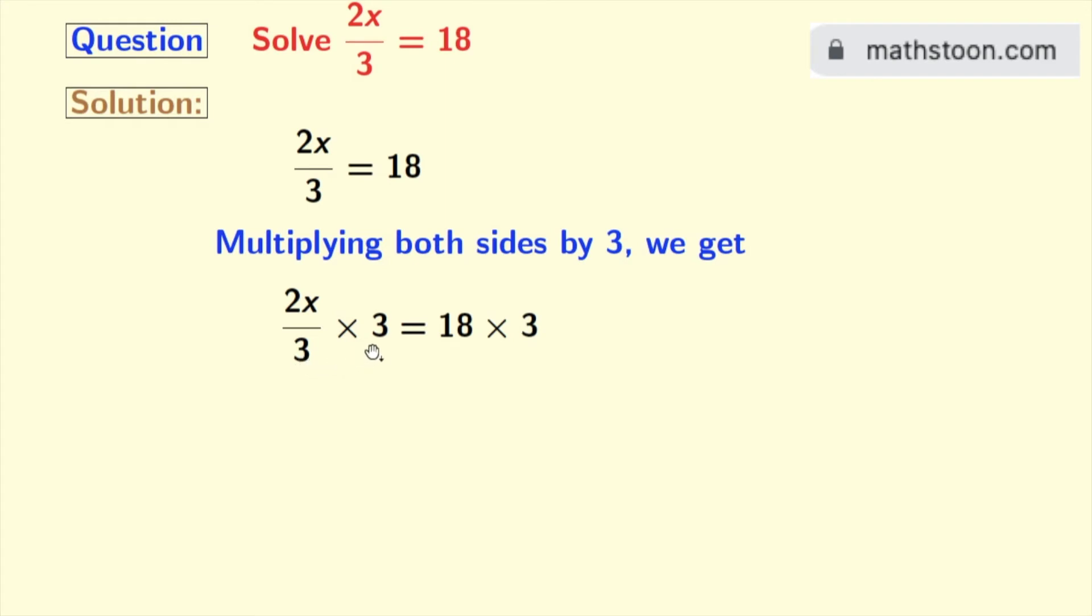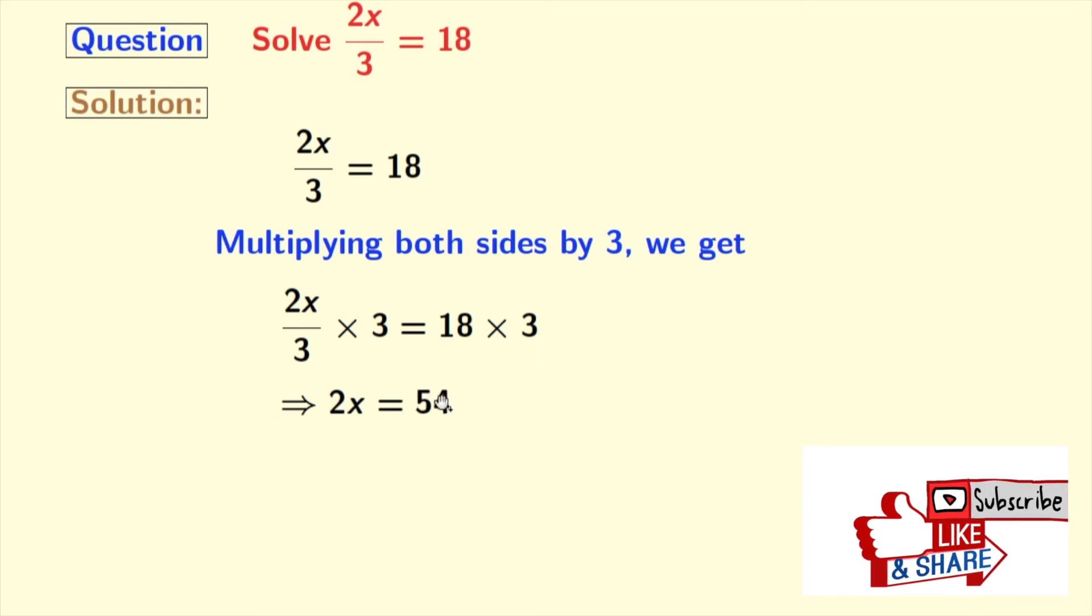In the left hand side, 3 gets cancelled. So we have 2x. And in the right hand side, we have 18 times 3, which is 54.